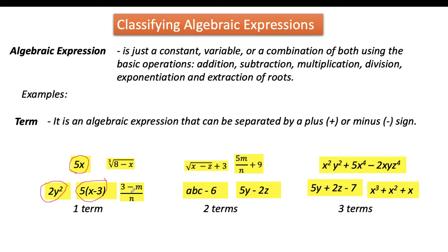The same applies to 3 minus m all over n. Because a vinculum — or fraction bar — is considered a grouping symbol as well. Therefore, it is considered as one group, making it a one-term algebraic expression. The same goes for the radical sign. A radical sign is also considered a grouping symbol. Therefore, the expression under it is one group, and they are all one-term algebraic expressions.